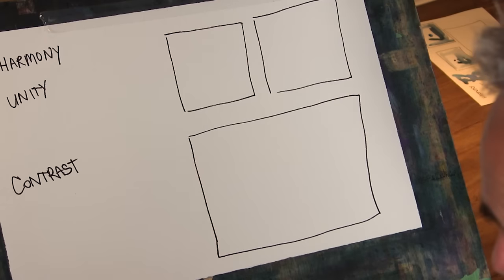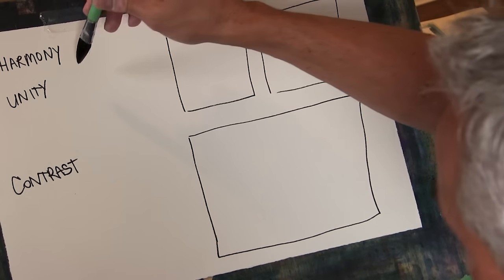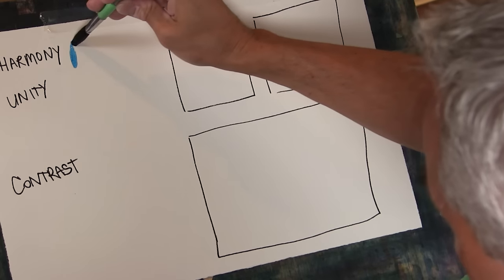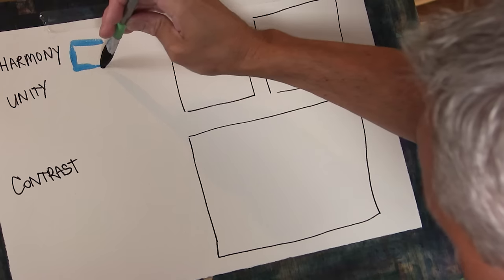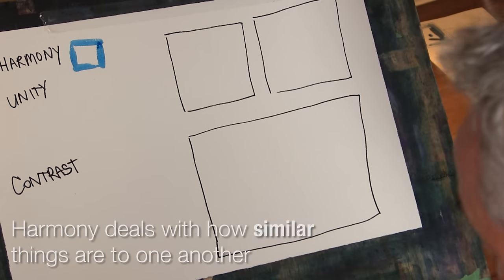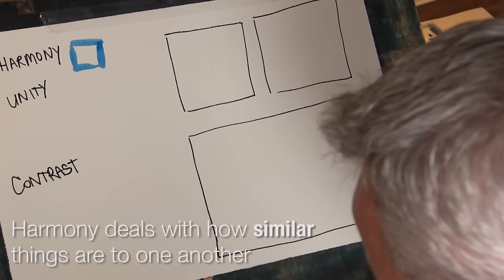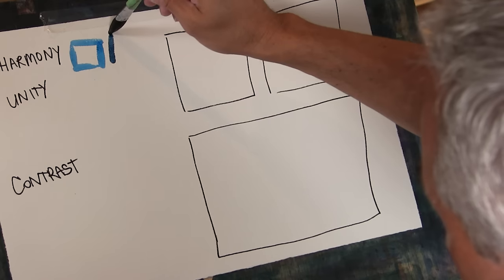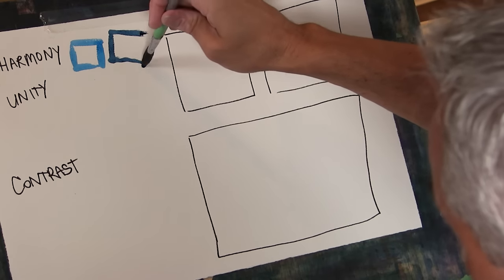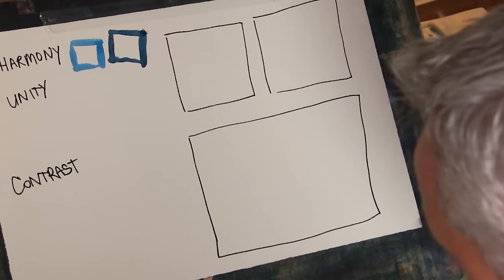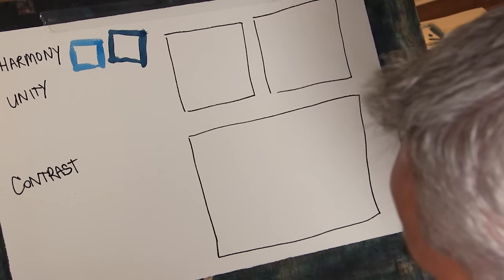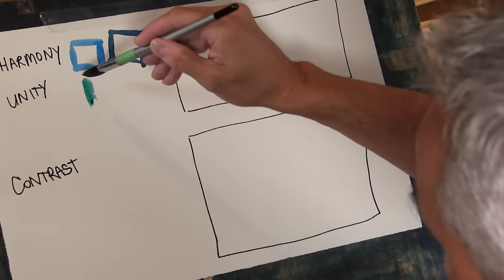So if we go over to my page let's talk about harmony first. Harmony just basically deals with how similar things are to each other. So if I do a square shape in blue and then a square shape in just a slightly darker blue and then a square shape in a greenish blue.